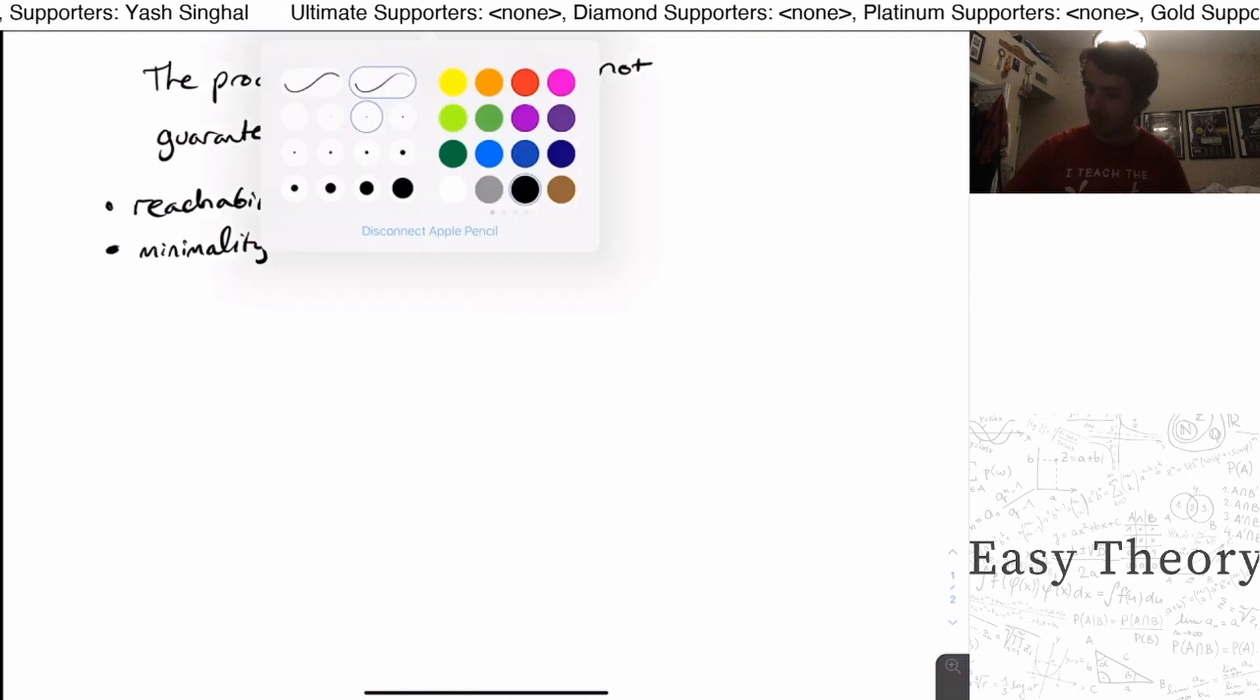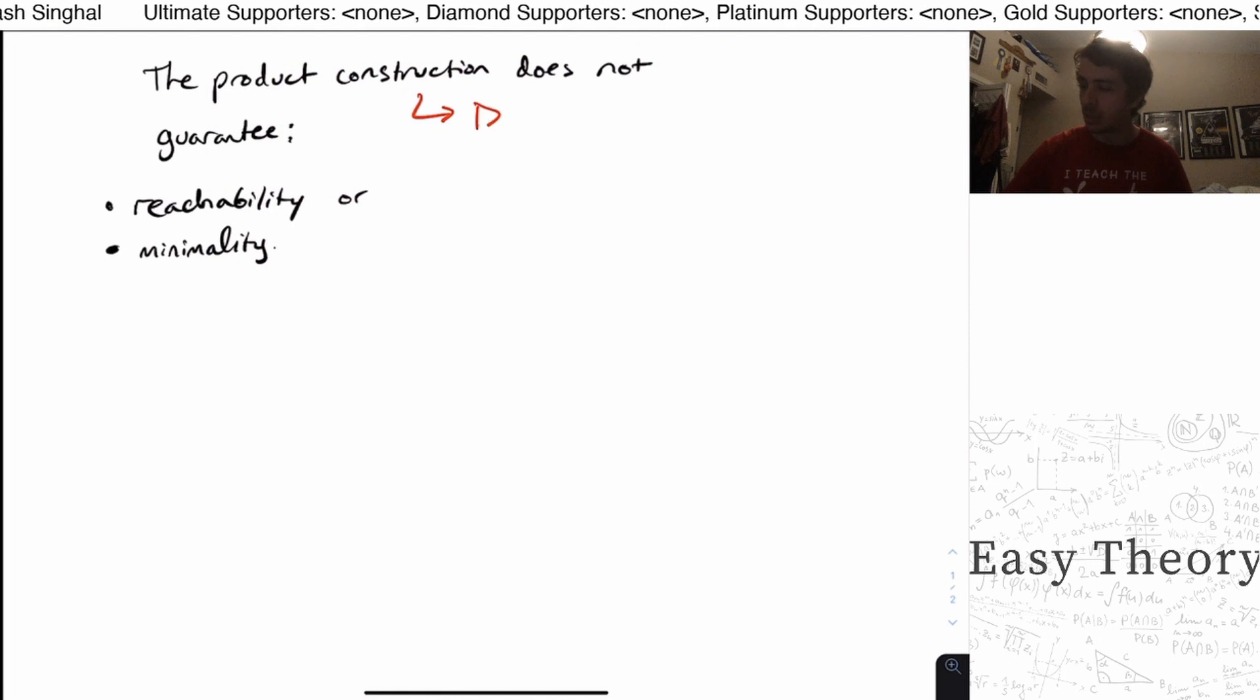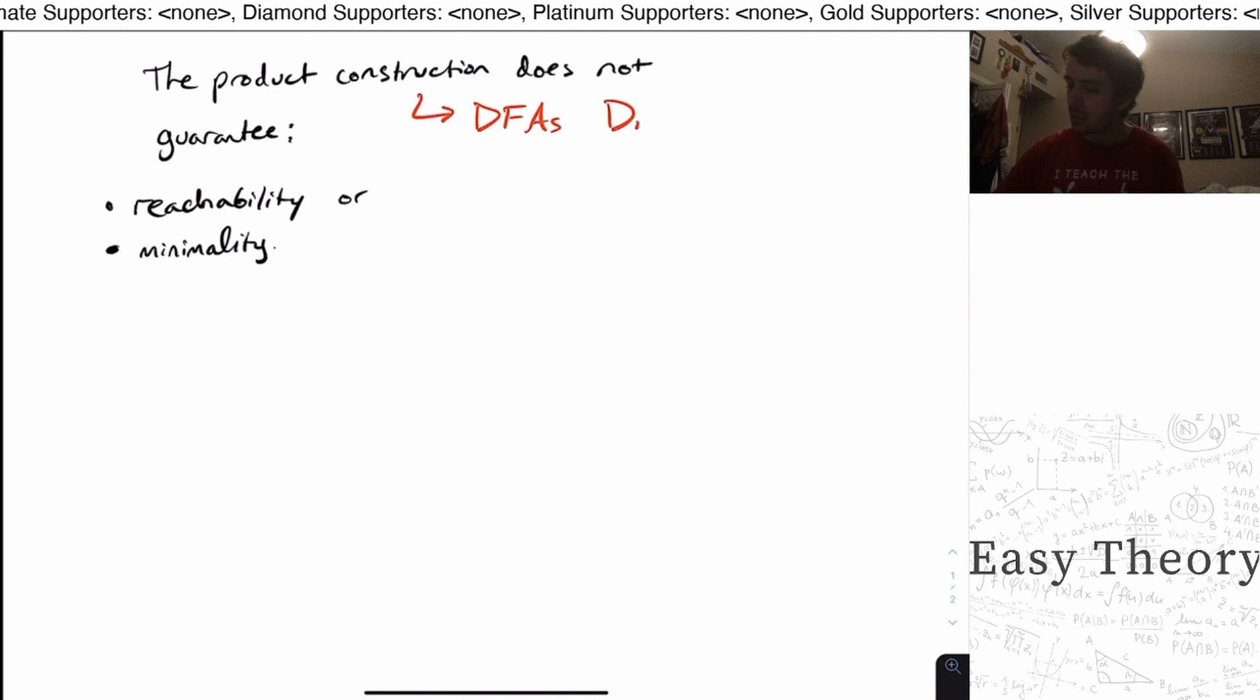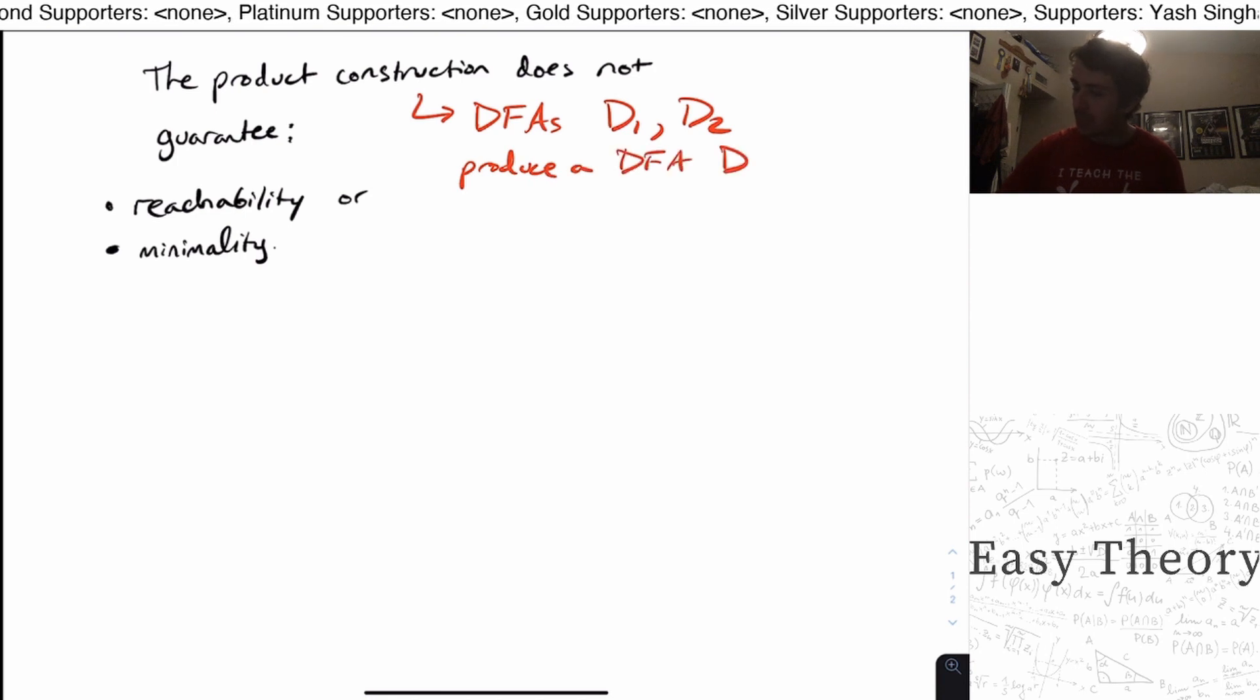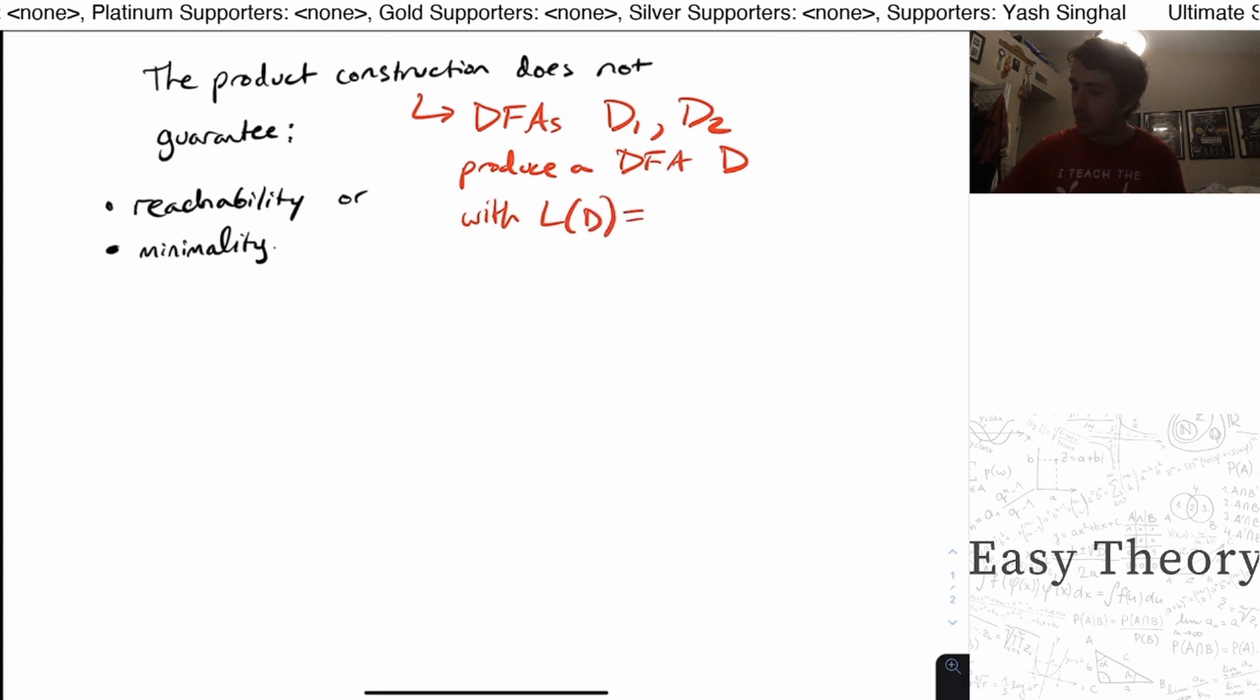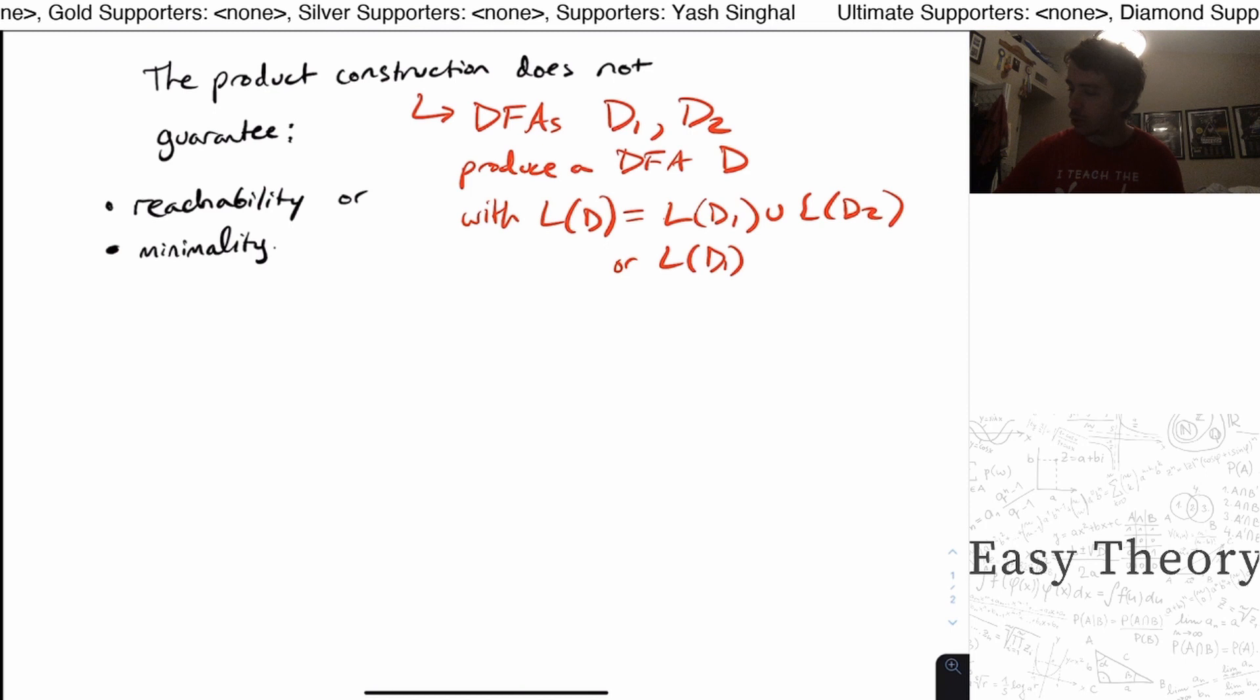So what does that mean? Recall that the product construction is a construction that involves two DFAs, D1 and D2, and will produce a DFA D with the language of D being either the union of the two languages or the intersection of the two languages.